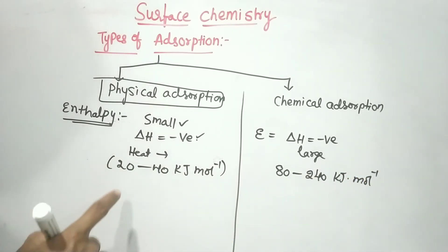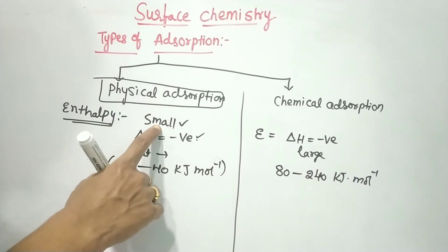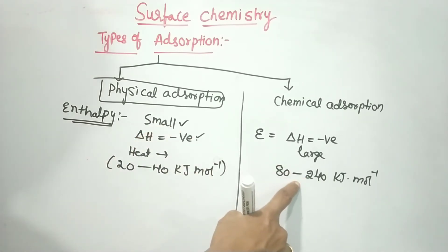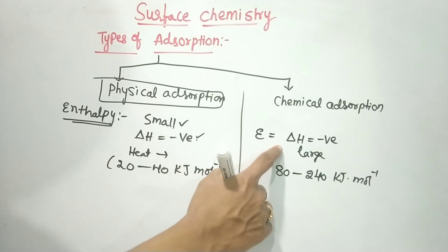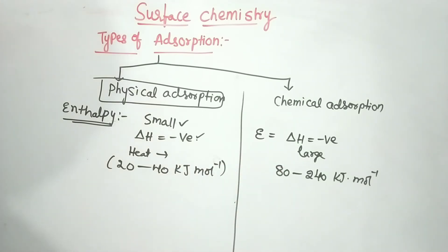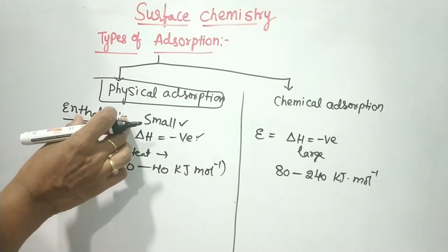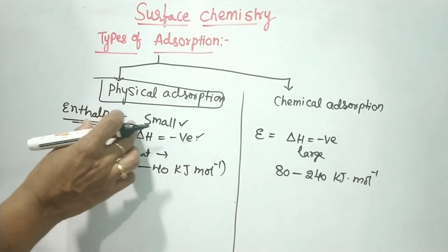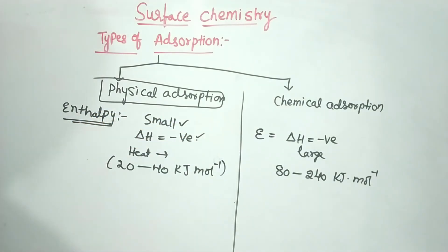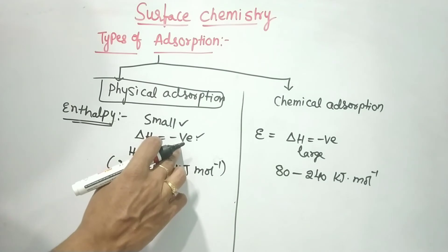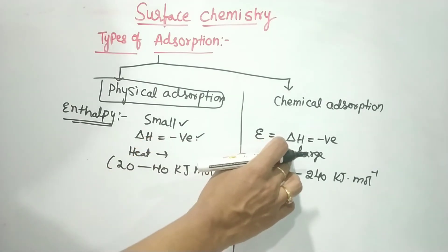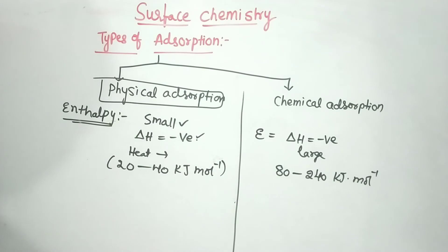So physical adsorption has a small enthalpy of adsorption, and chemical adsorption has a large enthalpy. This is because weak van der Waals forces release less heat, while strong chemical bonds release more heat. Physical adsorption is also non-specific in nature.